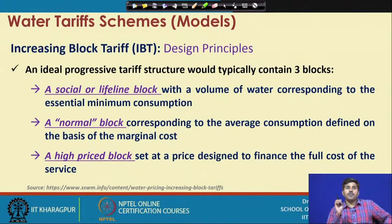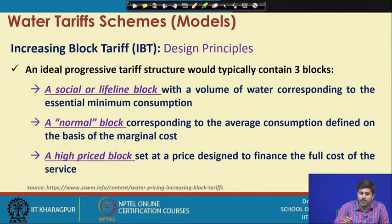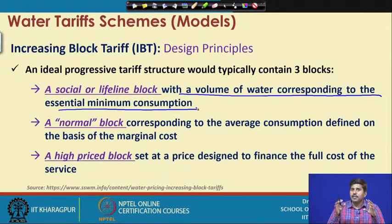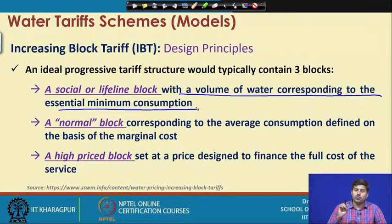An ideal progressive tariff structure typically contains a minimum of three blocks. The first is the social or lifeline block, which is also the basic block, responsible for providing a volume of water corresponding to the essential minimum consumption. Whatever the domestic minimum consumption needed, the utility should provide it at a lower cost. One cannot charge an exorbitant price for the basic minimum quantity of water, so the social or lifeline block is kept at a lower level and must be the first block in an IBT structure.